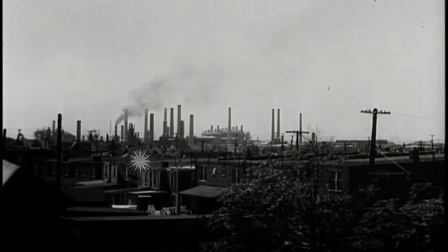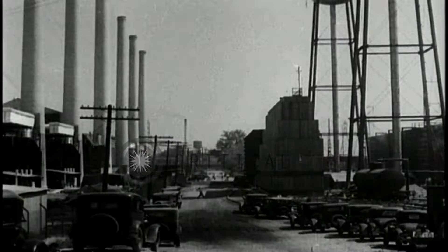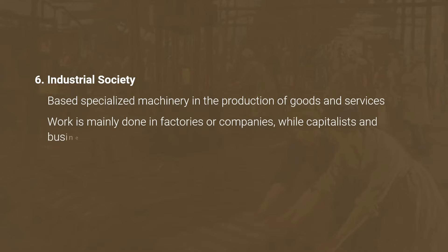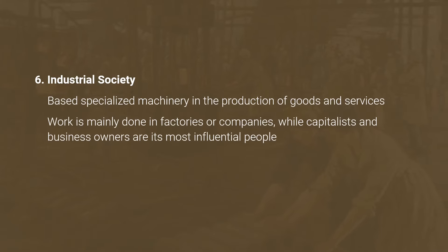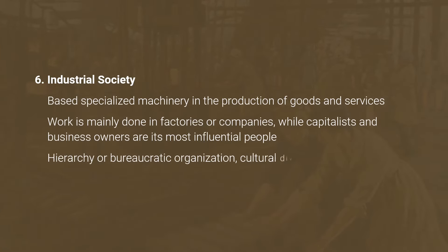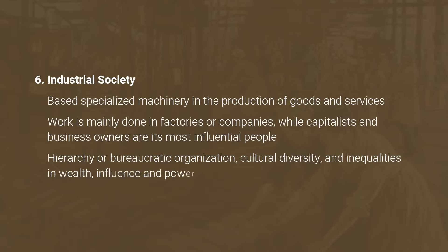The advances in science and technology during the late 18th century resulted in the Industrial Revolution, which in turn gave rise to the Industrial Society. The industrial form of society is based on the use of specialized machinery in the production of goods and services. Work in this society is mainly done in factories or companies, while capitalists and business owners are its most influential people. It is characterized by hierarchy or bureaucratic organization, cultural diversity, and inequalities in wealth, influence and power.